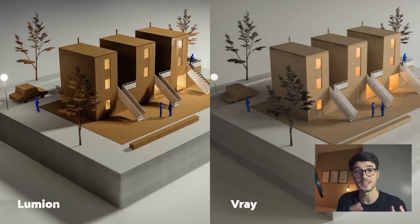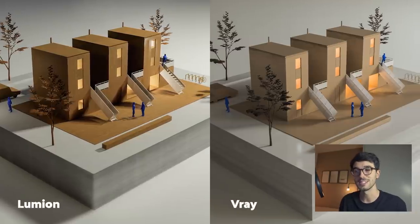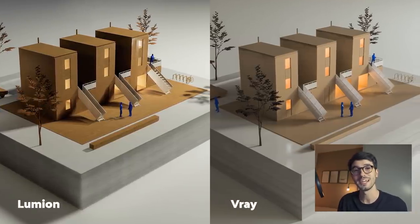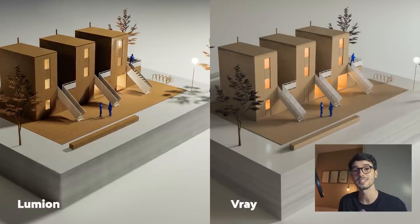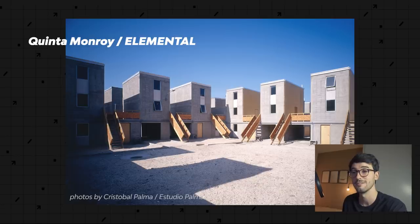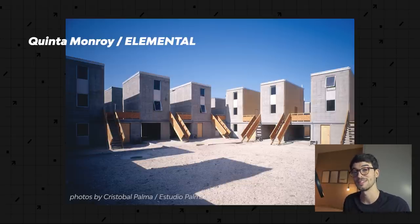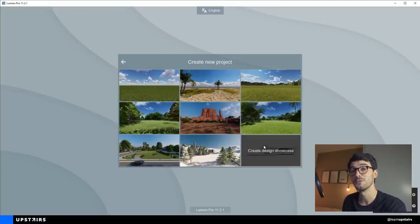First things first, the goal here is not to decide which one is better, because they're both different engines — one is a real-time renderer and the other is a typical CPU renderer, so that's not a fair comparison. But we are here to understand the process in each one and talk about that. The project we have here is Quinta Monroy from Elemental, from Alejandro Aravena. I highly recommend checking it out. Let's start with Lumion and leave V-Ray for later.